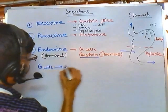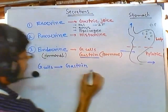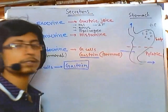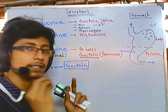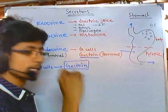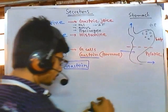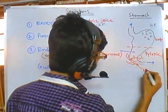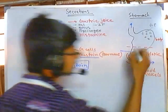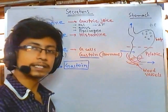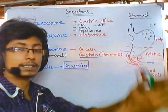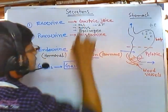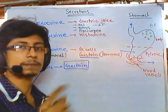In the pyloric region, G-cells start to stimulate and produce gastrin hormone. As they produce gastrin, this hormone migrates from this region — it mixes with the blood vessels present in the pyloric region — and travels through the bloodstream back to signal other regions, with more and more gastrin accumulating.